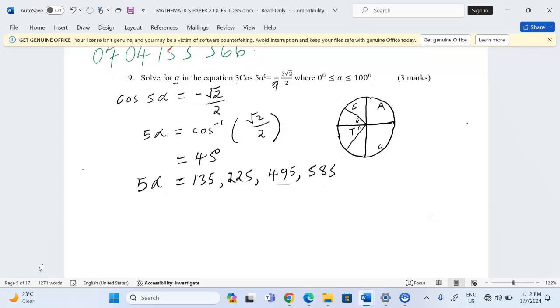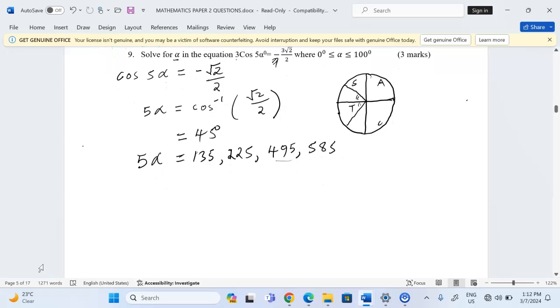Therefore, all these angles now are suitable for 5α. So to get the value of α, now we need to divide through by 5, such that 135 divided by 5 gives us 27 degrees. 225 divided by 5 gives us 45. 495 out of 5 gives us exactly 99.